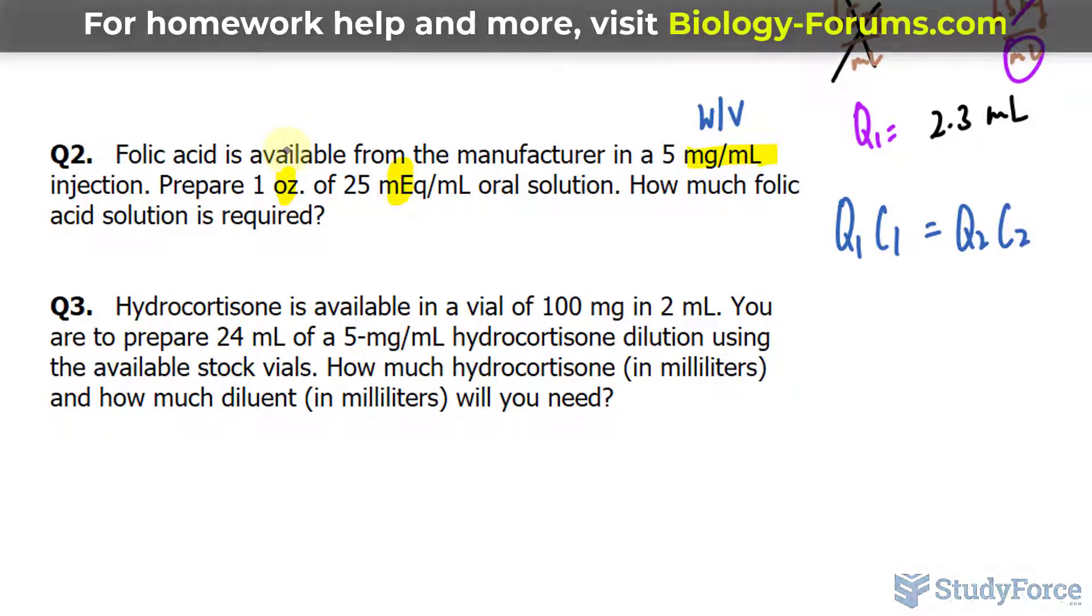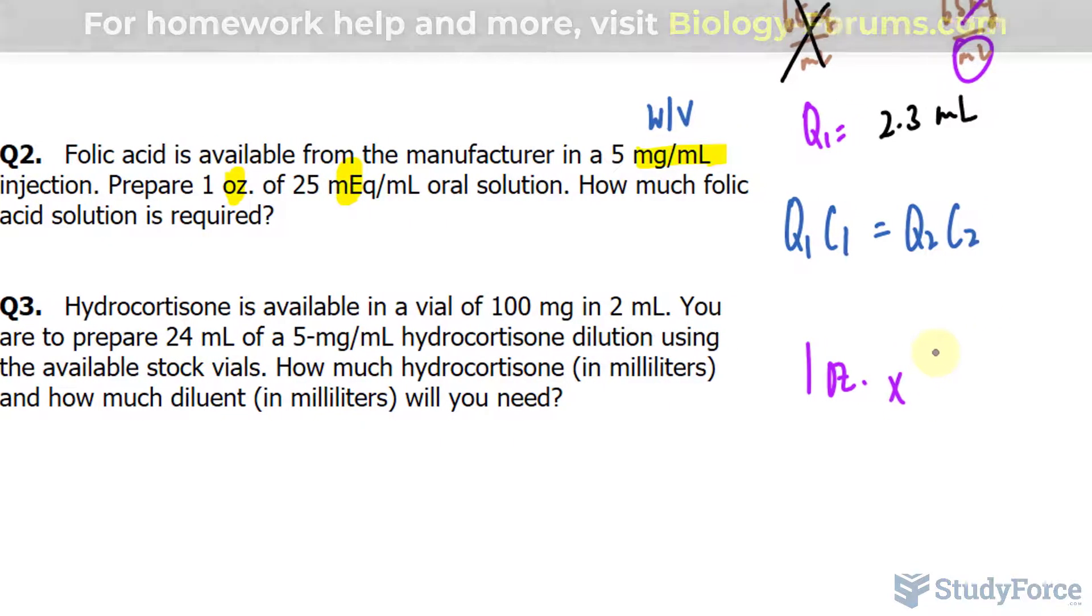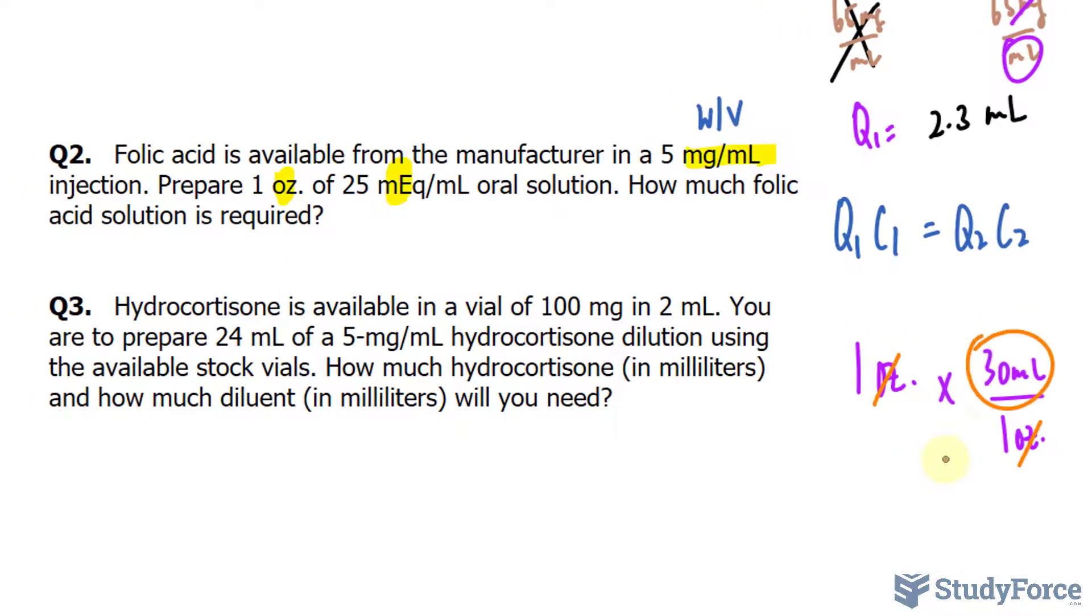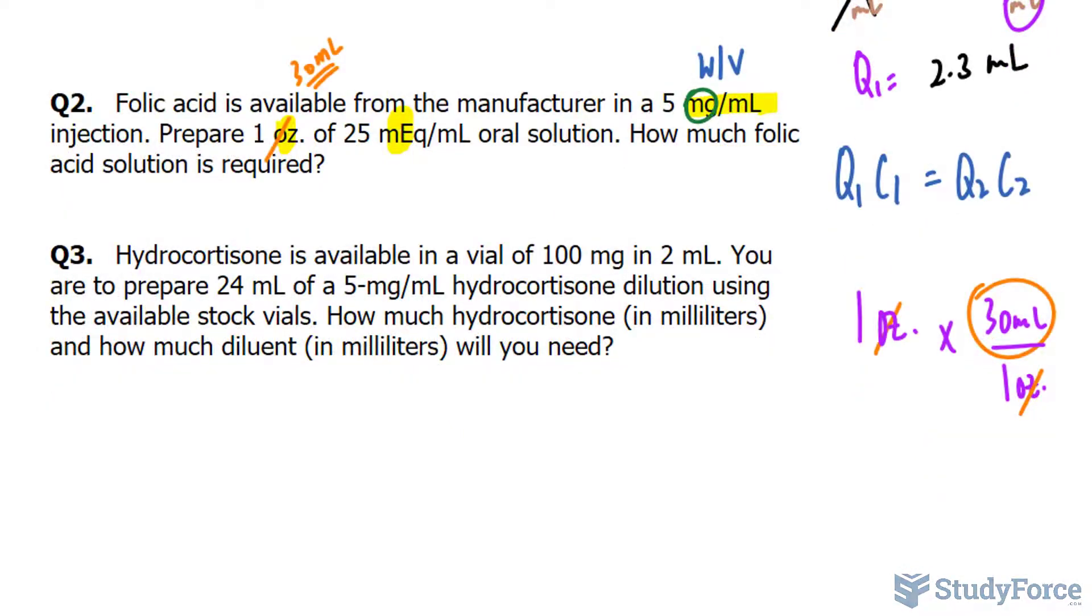Find out how many milliliters make one ounce, and the correct conversion is that for every one ounce there are 30 milliliters. So we have one ounce, that's what they want us to prepare, and we want to convert this into milliliters. The conversion factor is for every 30 milliliters we get one ounce. So essentially they want us to prepare 30 milliliters. If you multiply this out you end up with 30 milliliters. That value can be substituted in for Q2.